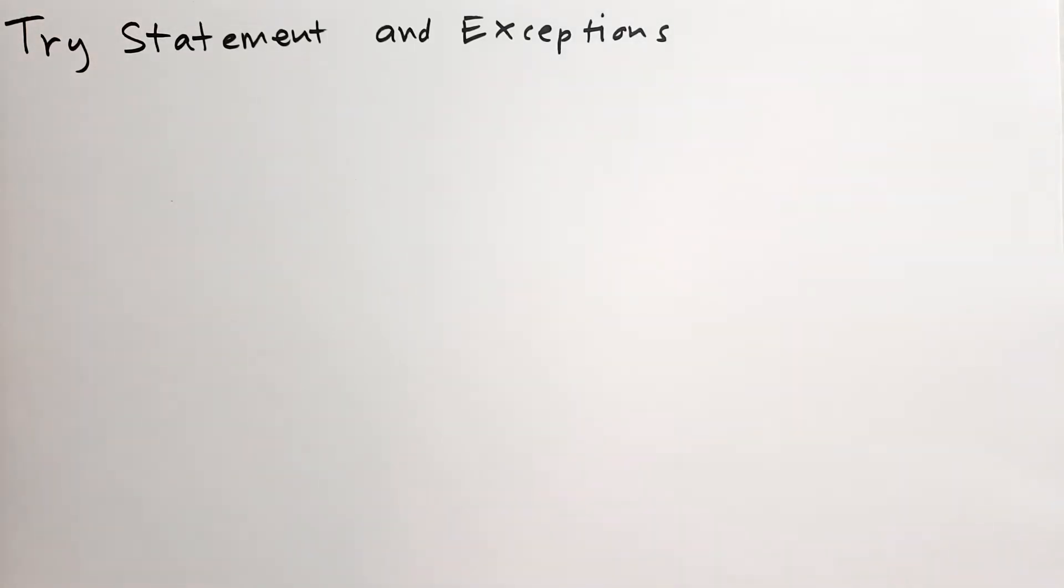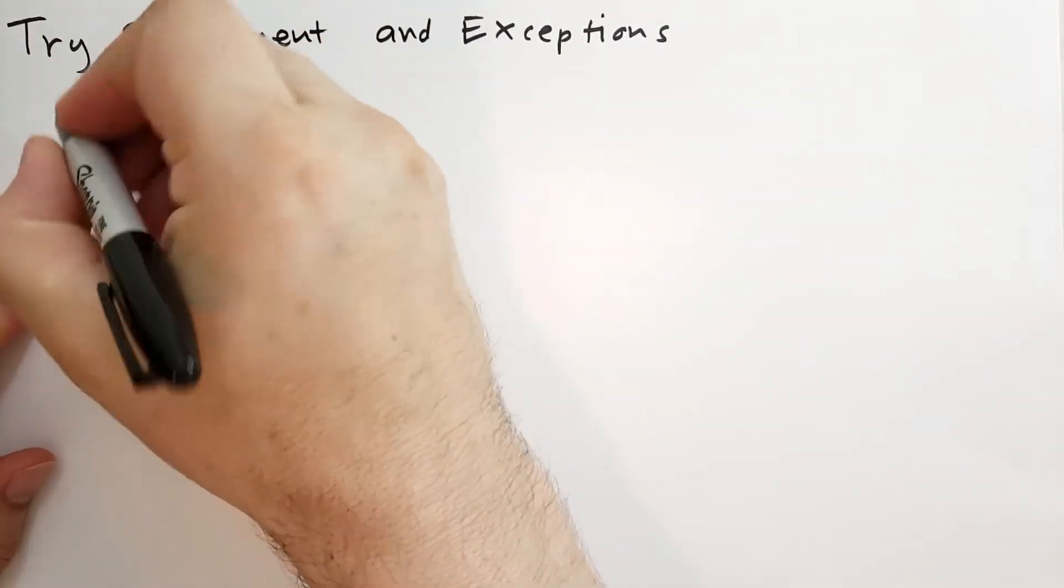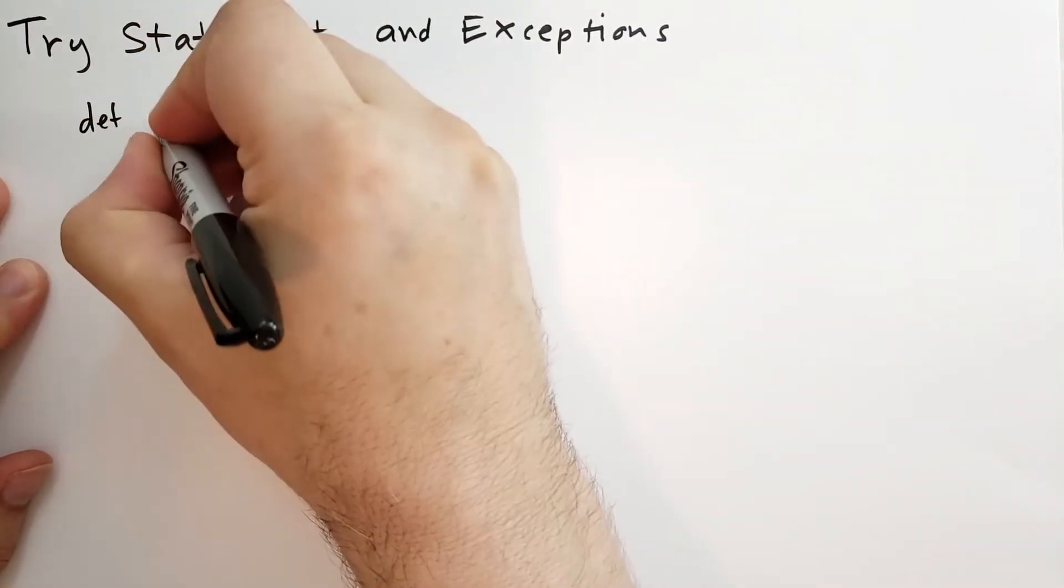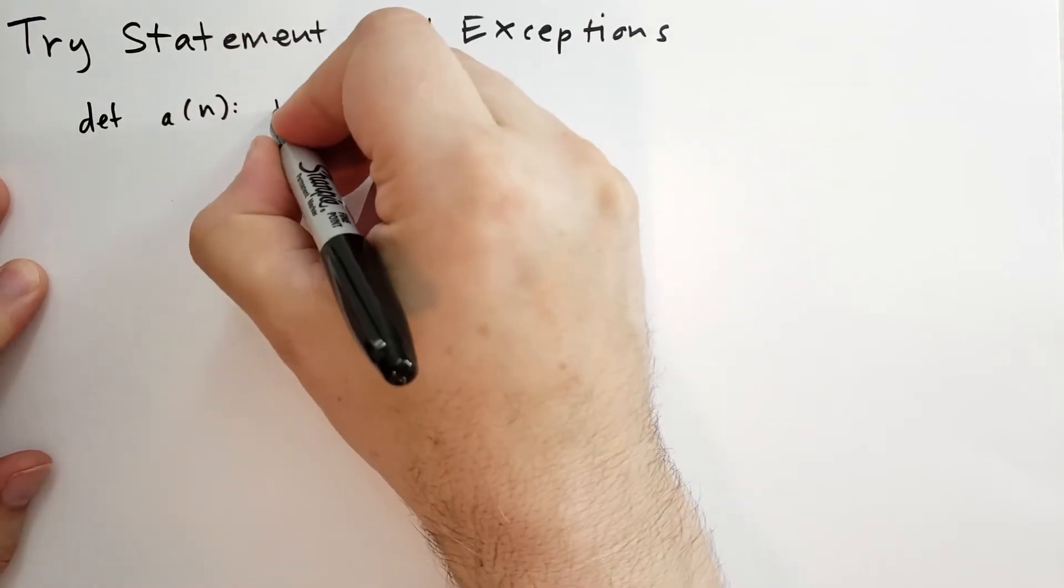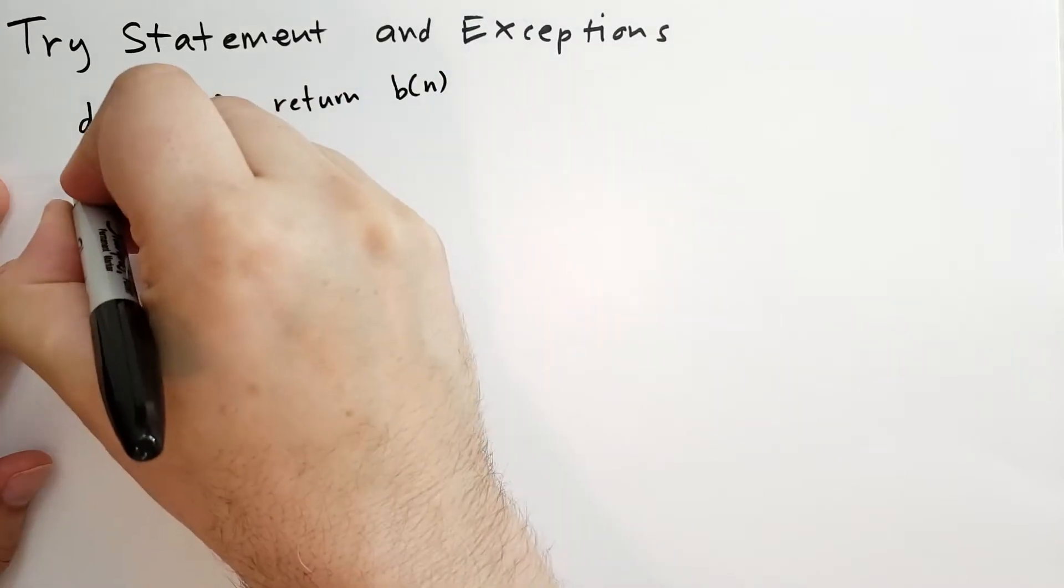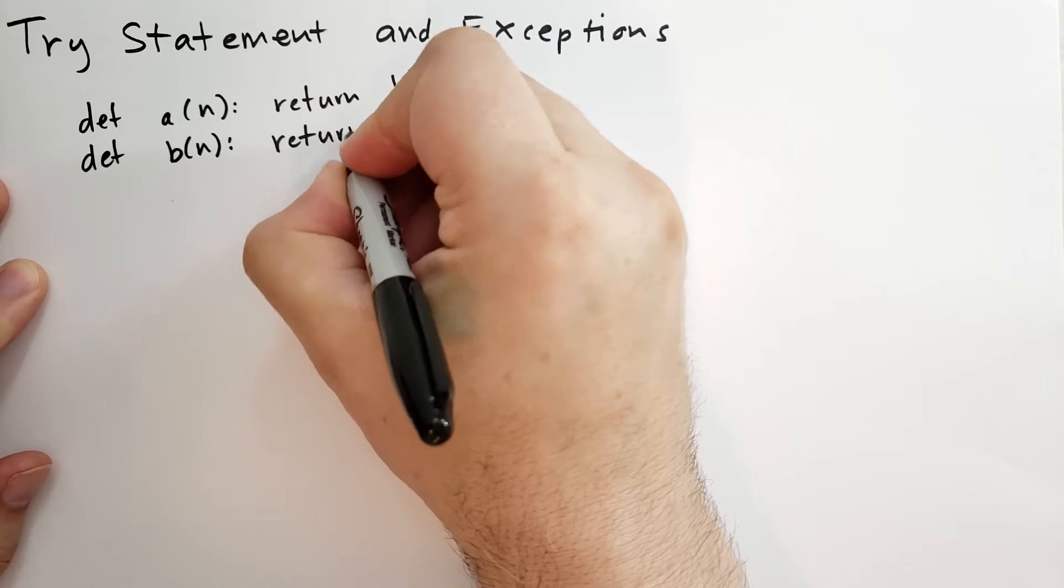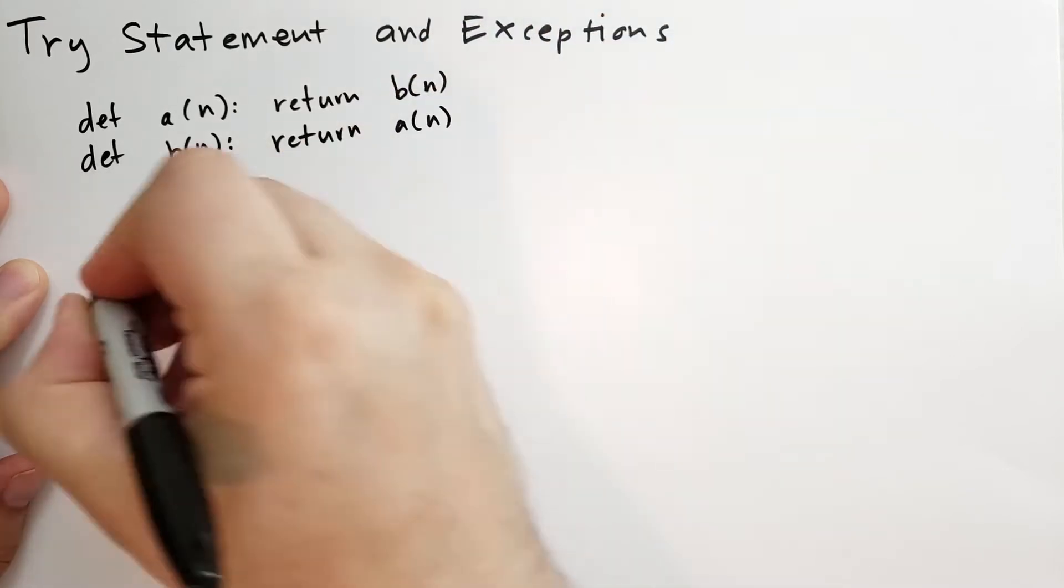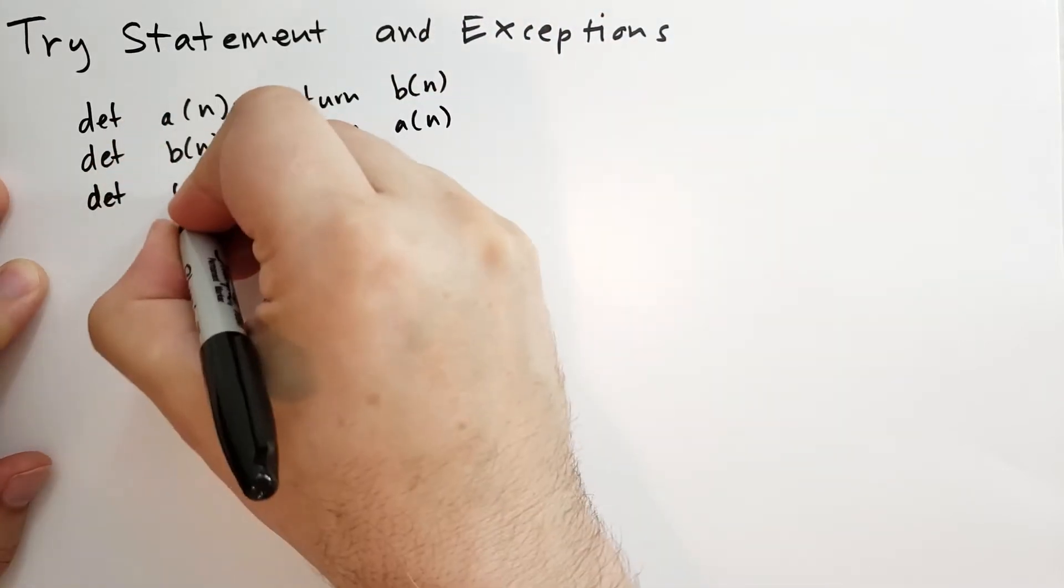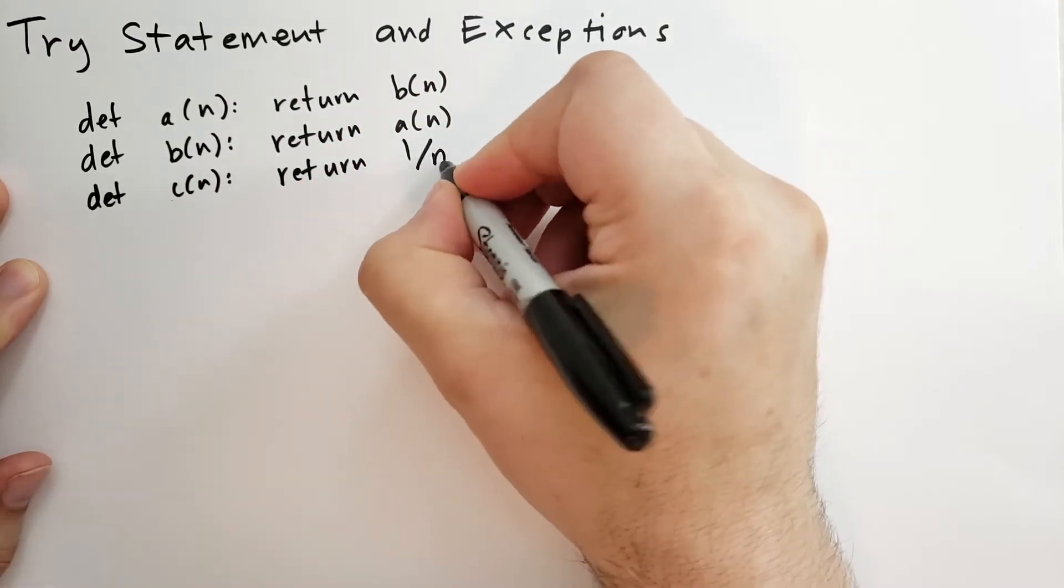When the code continues normally, that means you found the value. Let's talk about the call stack and what happens when an exception is raised. I'm going to have some sample code here that's rather ridiculous, but it should illustrate what's going on. So we have three functions. a of n is going to return b of n, b of n is going to return a of n, and c of n is going to return 1 divided by n.